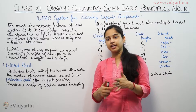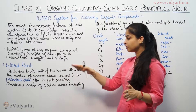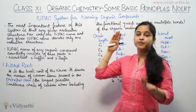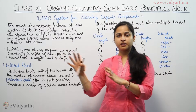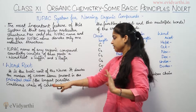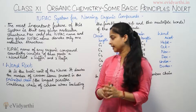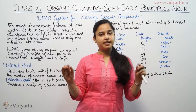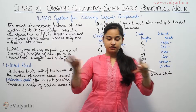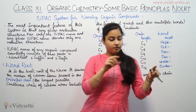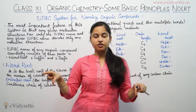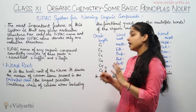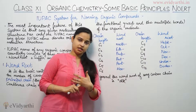What is the principal chain? The principal chain is the longest possible continuous chain of carbon atoms, including the functional group and the multiple bonds. We will define it as the longest possible continuous chain of carbon atoms, including the functional group and the multiple bonds.